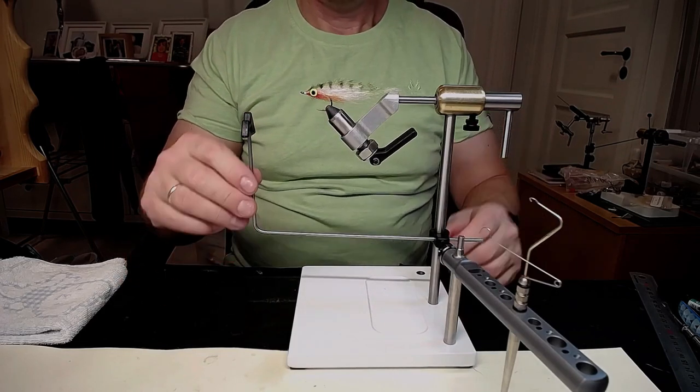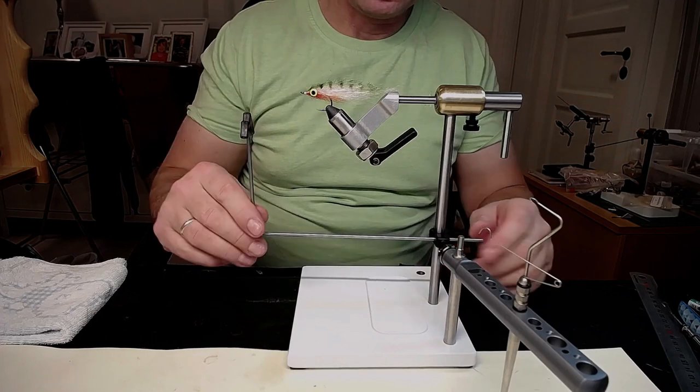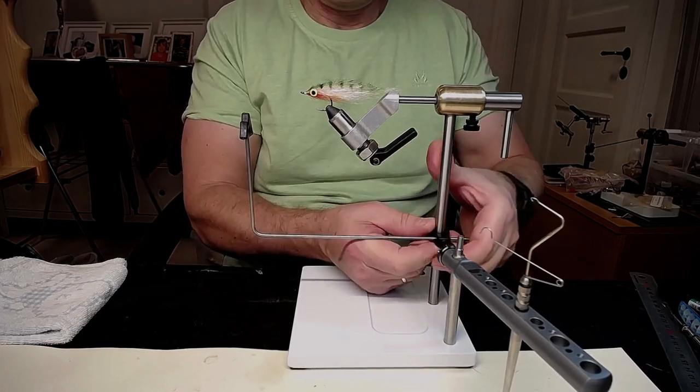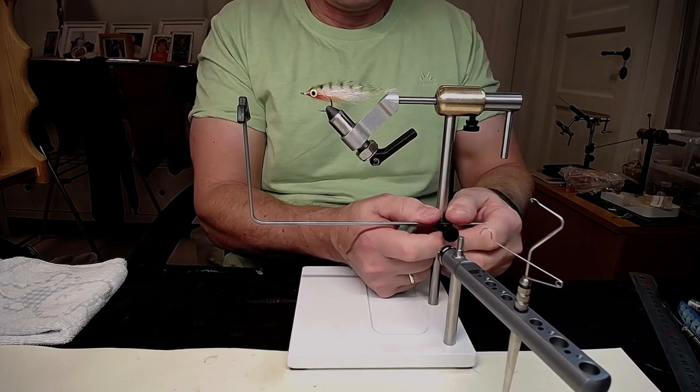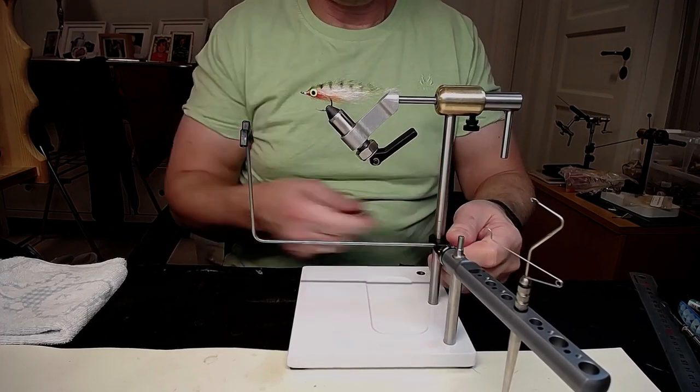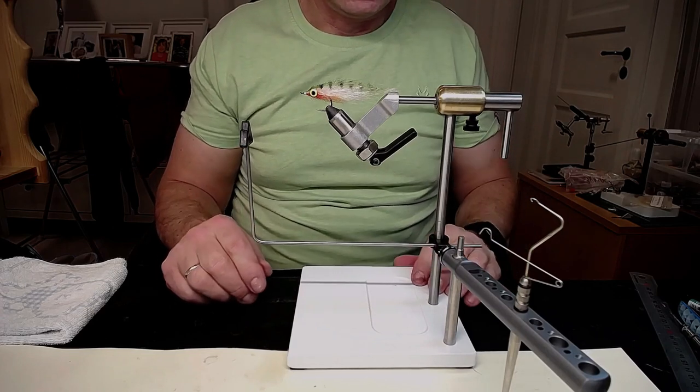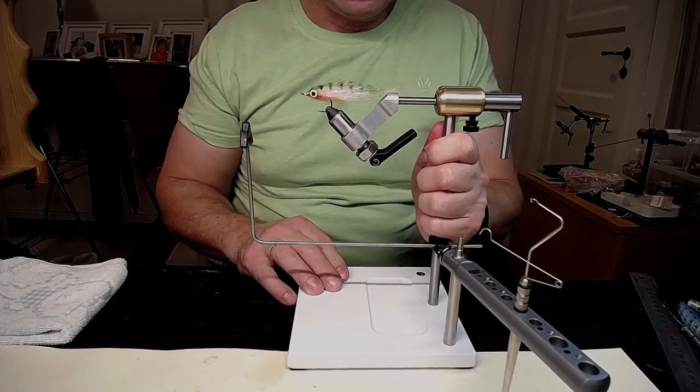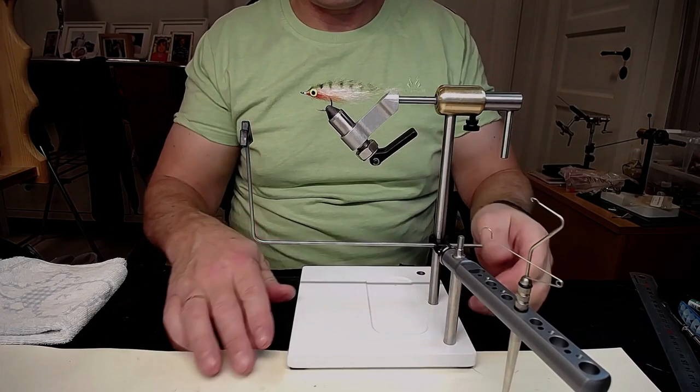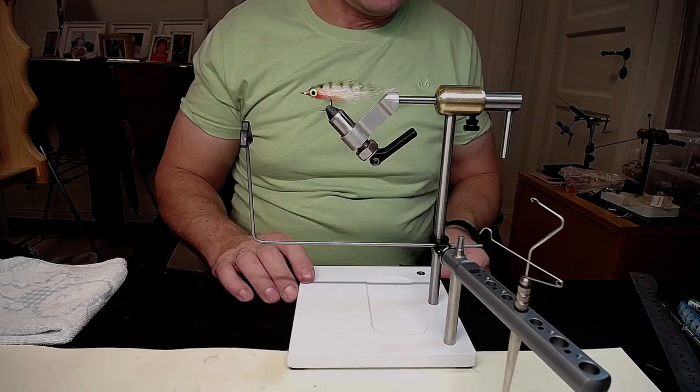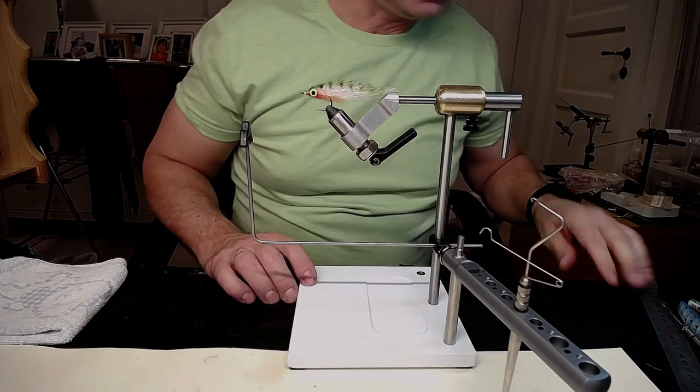And of course you have this bobbin cradle here, you can move this up and down, it's very good. There is a lot of equipment you can get with this vise. It stands very sturdy. It comes with rubber feet on under here, and the way you adjust this...